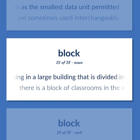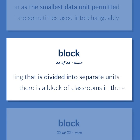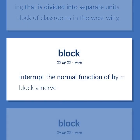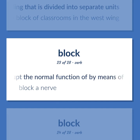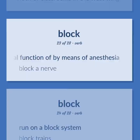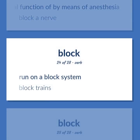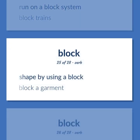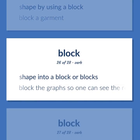Housing in a large building that is divided into separate units — there is a block of classrooms in the west wing. Interrupt the normal function of by means of anesthesia — block a nerve. Run on a block system — block trains. Shape by using a block — block a garment. Shape into a block or blocks — block the graphs so one can see the results clearly.